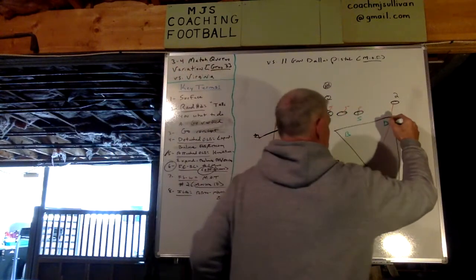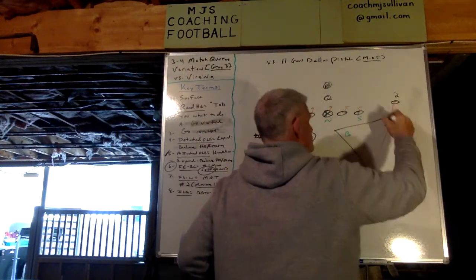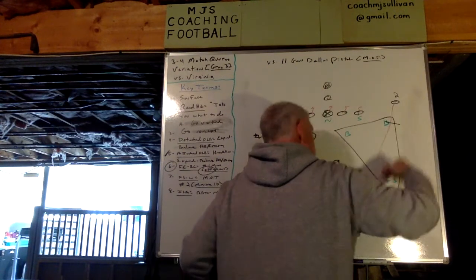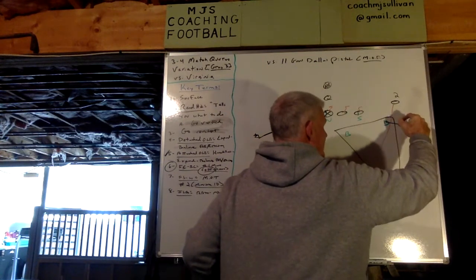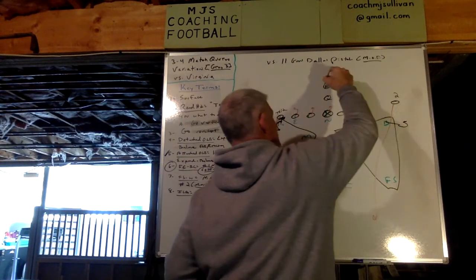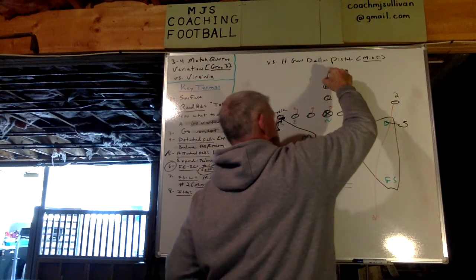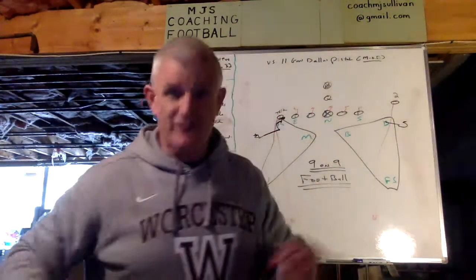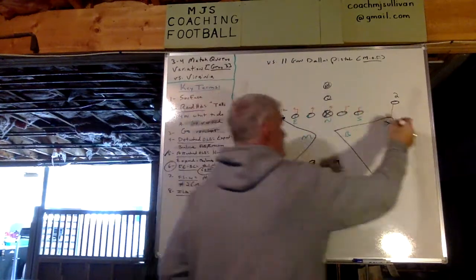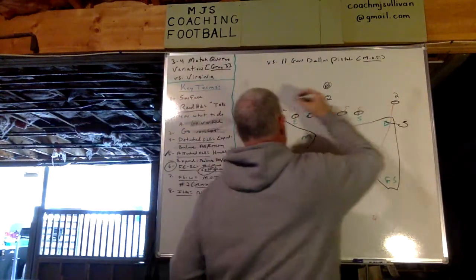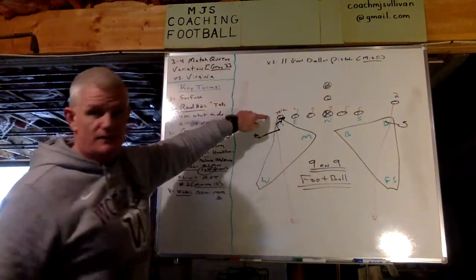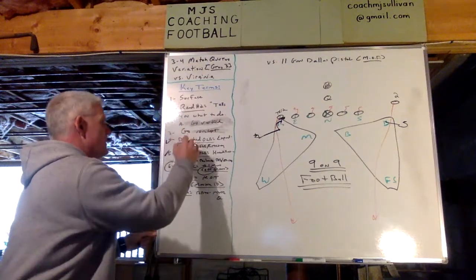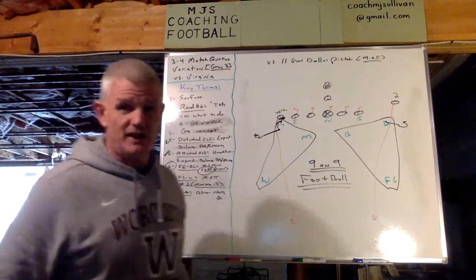Over here, the detached outside linebacker. Surface. Ice to two as he's expanding. Two's gone. He comes to balance. Same thing — running back. If he's not coming out to him on a flare or flat route, balance up. He's looking for a crossing route from this side.